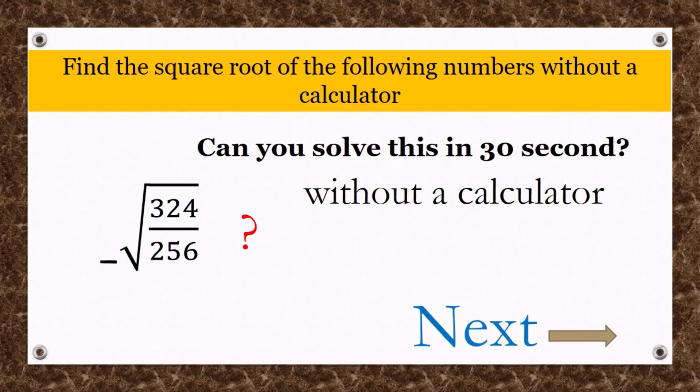Another thing, do not divide 324 to 256 in the square root, because the question is asking you to find the square root of two numbers. Division will be at the last final answer. Also, this thing is minus, so your last answer should be with minus. Keep those two things in mind.